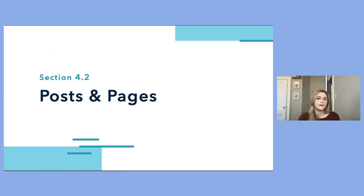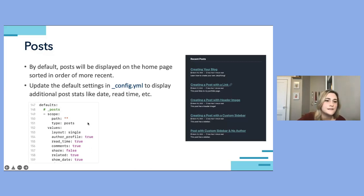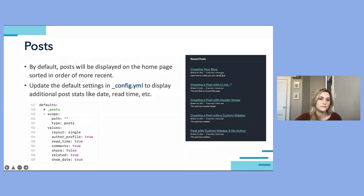The two basic file types that determine the content displayed on our site are posts and pages. By default, the list of posts will be displayed on the homepage in order of most recent, according to the date set for each post. In the config file, we can update the default settings to show additional stats about each post like the author name, post date, and expected read time. We can also enable settings that show related posts, allow for comments, and allow for social sharing.